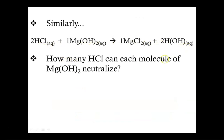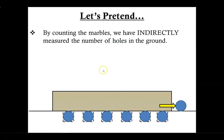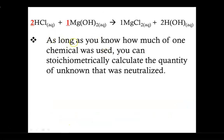Similarly, in this chemical reaction, I'm using hydrochloric acid to neutralize magnesium hydroxide base. So how many HCl molecules can each molecule of magnesium hydroxide neutralize? Because it's a one-to-two ratio, one magnesium hydroxide can neutralize two hydrochloric acids. Remember, the ratio won't always be one-to-one — maybe in a different case you require three marbles to fill up one hole, then it'd be a three-to-one ratio. But so long as you know how much of one chemical was used, you can stoichiometrically calculate the quantity of unknown that was neutralized.